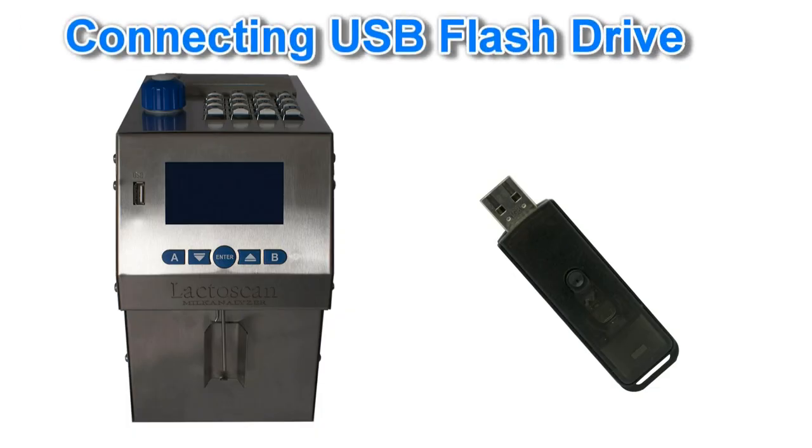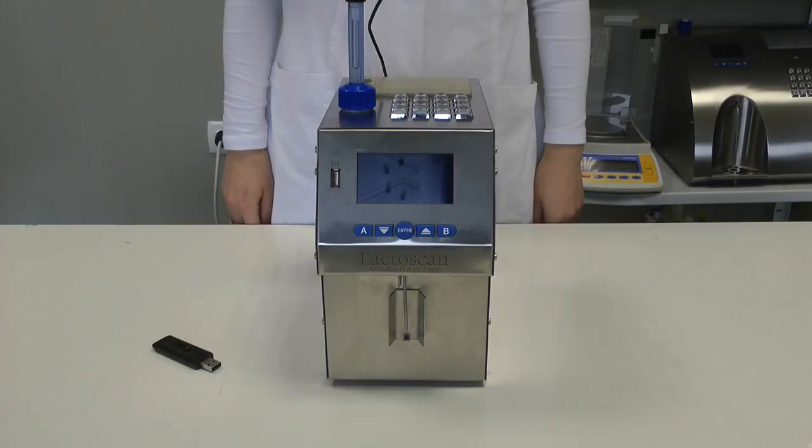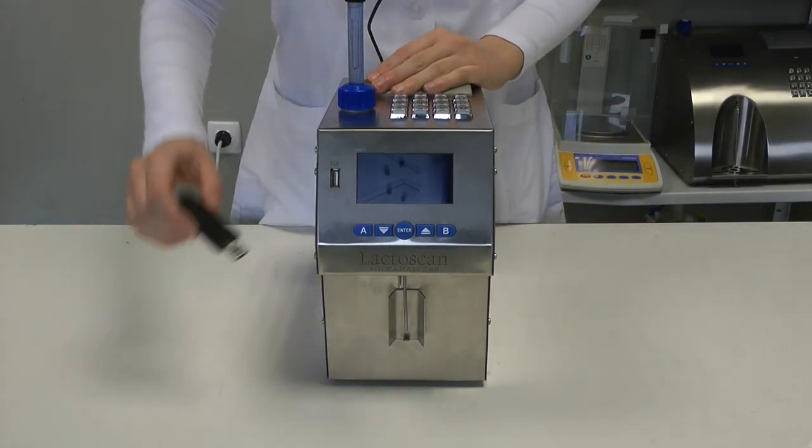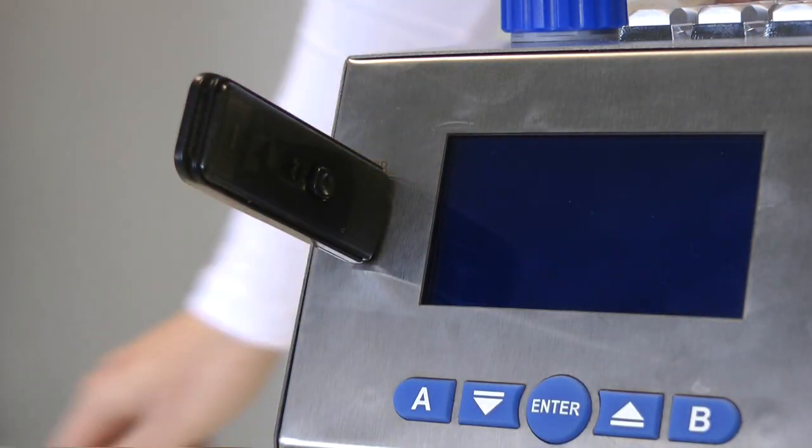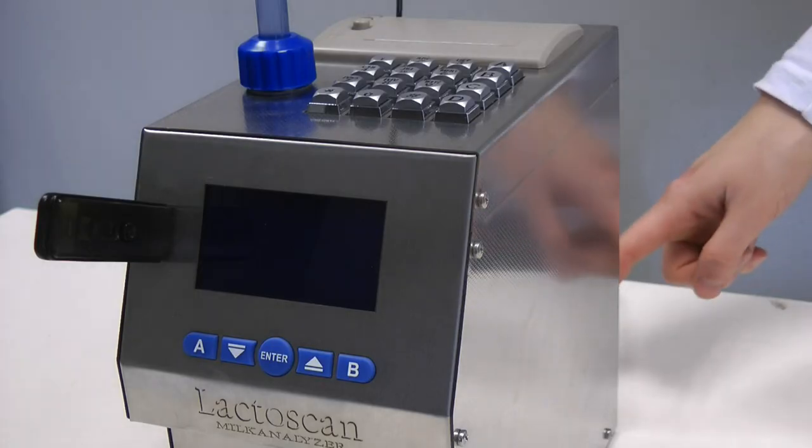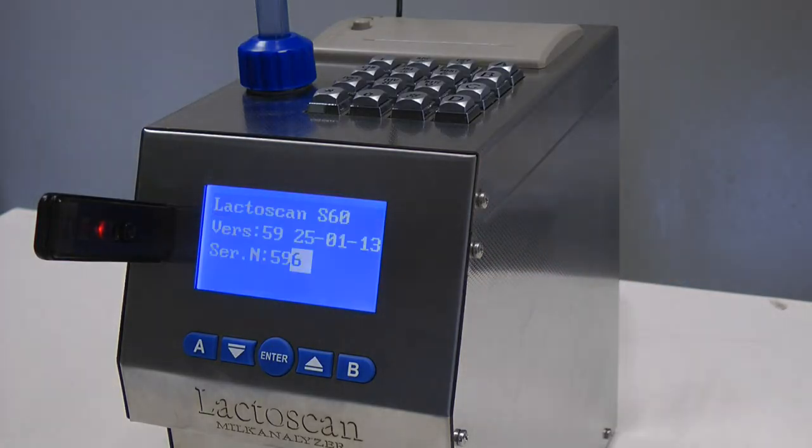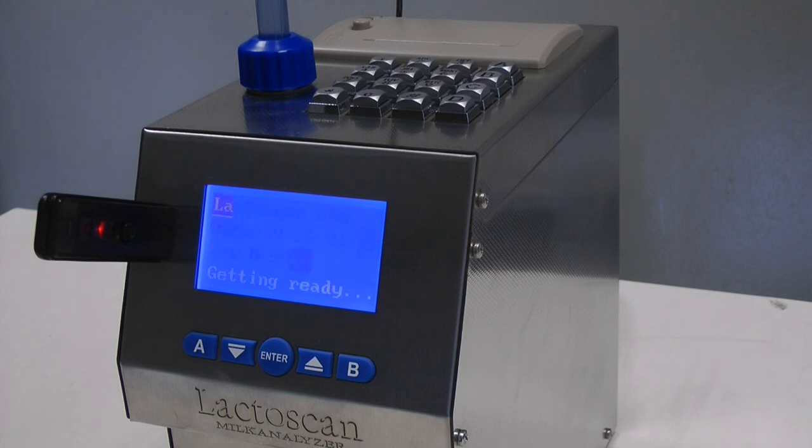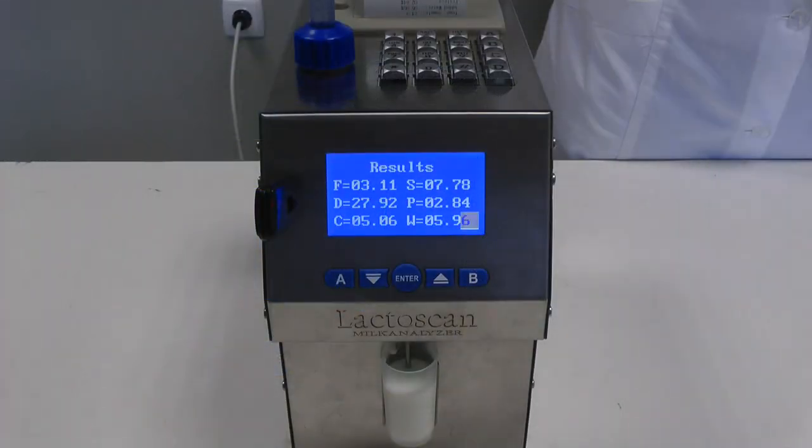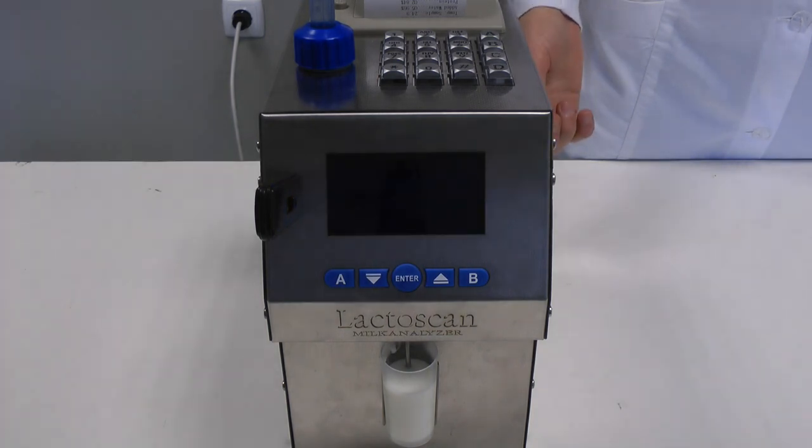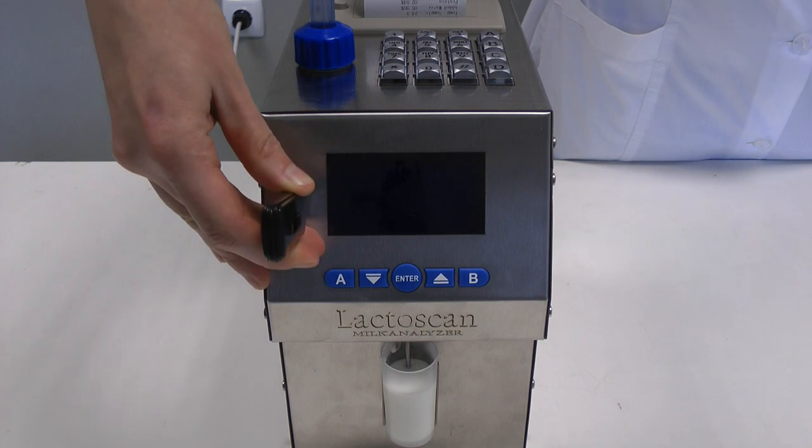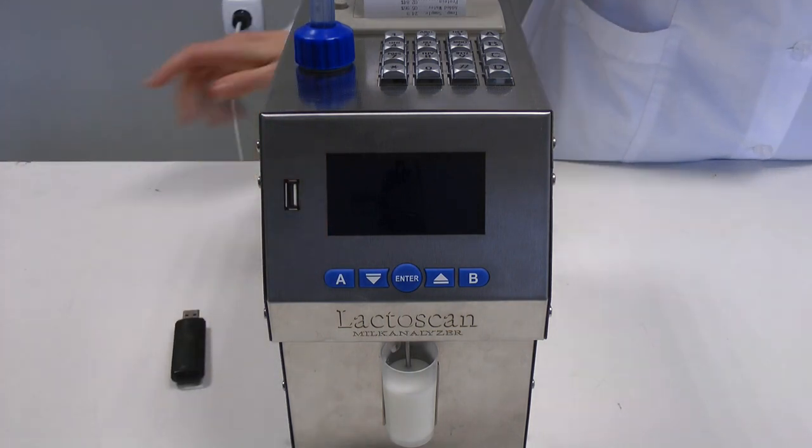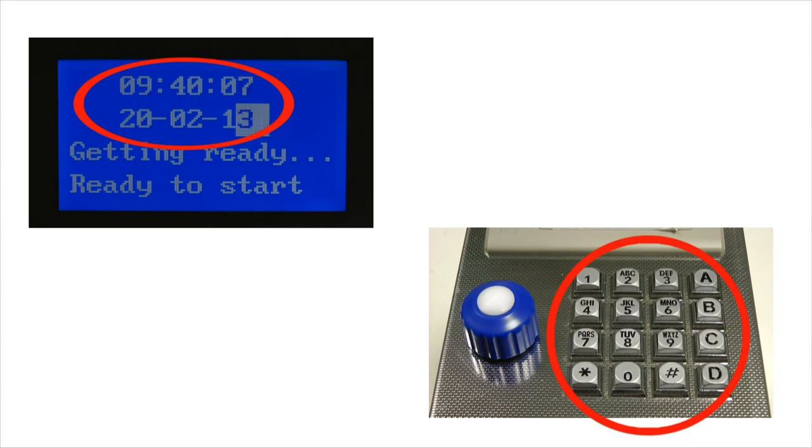USB flash drive. This option allows connecting standard USB flash drive to the LaktoScan. It automatically creates a log of all measurements made with the analyzer. After USB flash drive is connected, LaktoScan starts writing the results from each measurement. If you do not need to make an archive, simply disconnect the flash drive. We recommend this option to be used in combination with options for real-time clock and keypad.